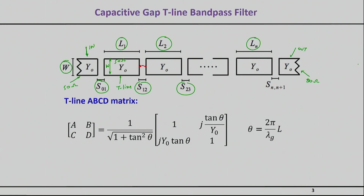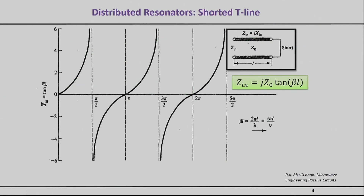There are some tools we have at our disposal. The first tool we already know: the ABCD matrix of a transmission line section, which we've seen in the very first part of the class. The second thing is something we haven't seen as much: why a transmission line section can actually be used as a resonator. We've touched on this a little, but here's a quick reminder.